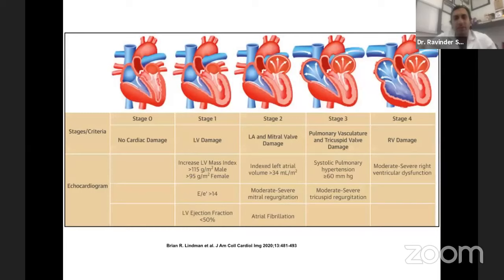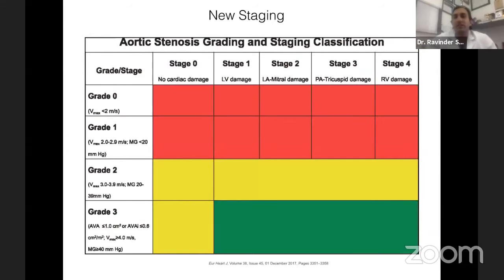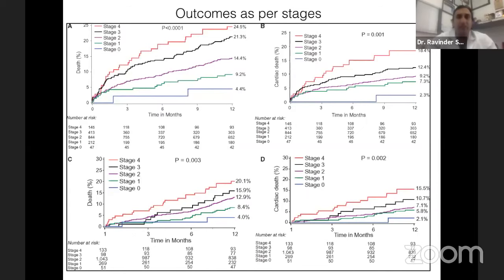There is another classification staging valvular heart disease from Stage 0 to Stage 4 based on downstream damage: LV damage, LA and mitral valve damage, pulmonary and tricuspid valve damage, and finally RV damage. If a patient has severe aortic stenosis and comes with RV failure, the prognosis is very poor — mortality is as high as 24.5%. Patients in Stage 4 with RV damage need treatment at the earliest.